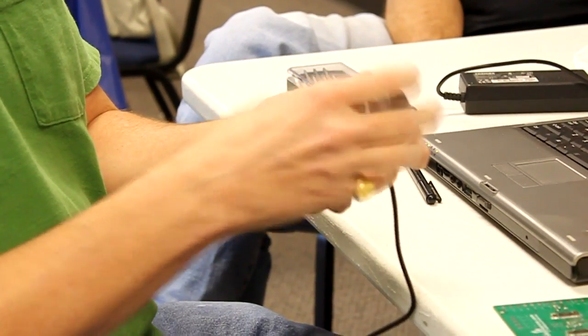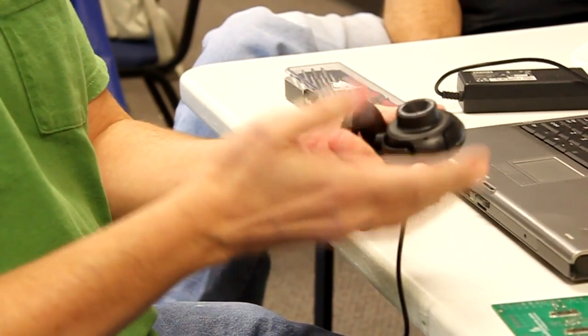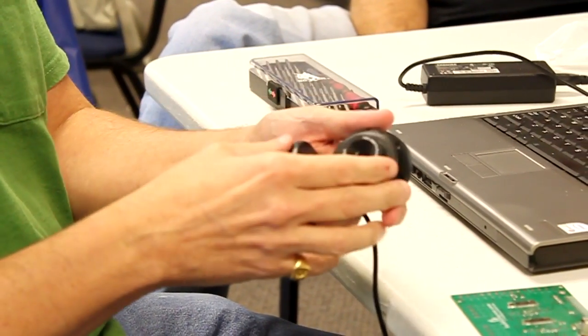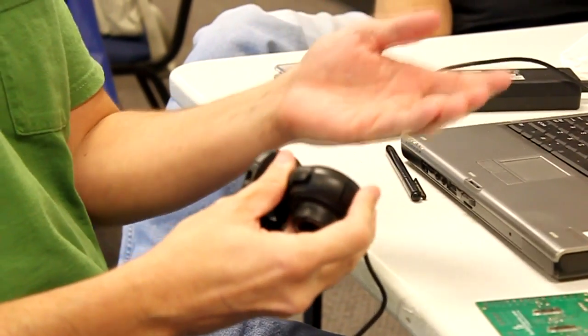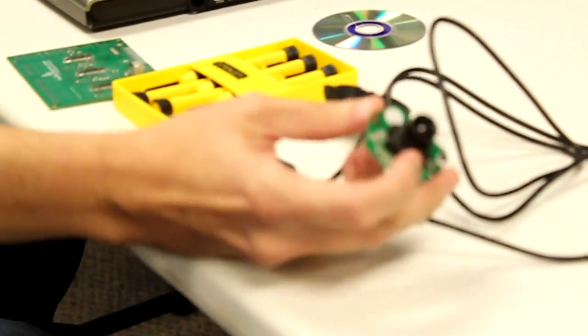You have a sensor which picks up the colors and light behind the optics. You have a circuit board that processes that information, and then you have a mechanical component here which is the screw, and this actually focuses it.